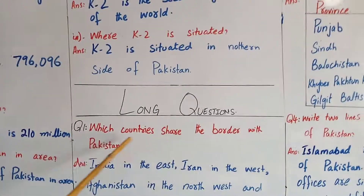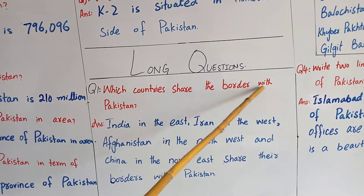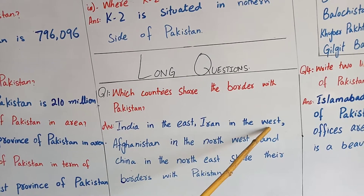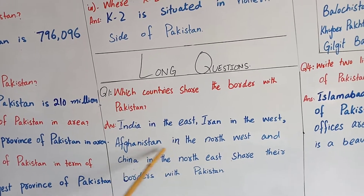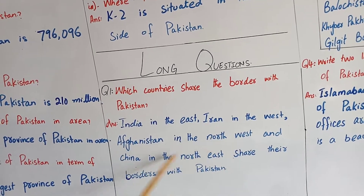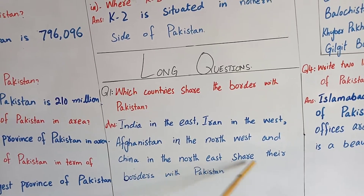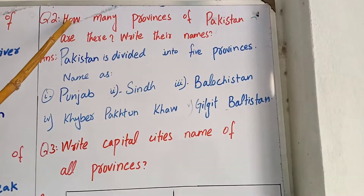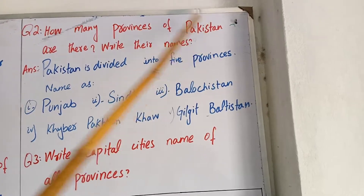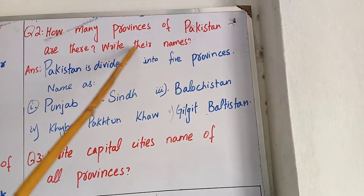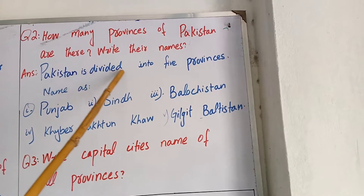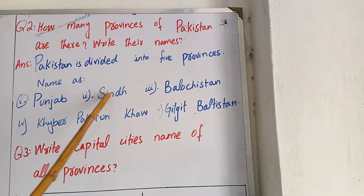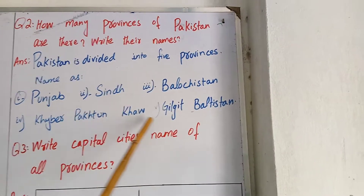Long question answer. Which countries share the border with Pakistan? India in the east, Iran in the west, Afghanistan in the north-west, and China in the north-east share their border with Pakistan. Question two: how many provinces does Pakistan have? Write their names. Pakistan is divided into five provinces named Punjab, Sindh, Balochistan, Khyber Pakhtunkhwa, and Gilgit-Baltistan.